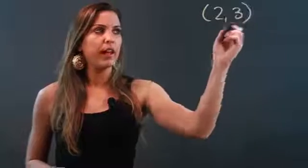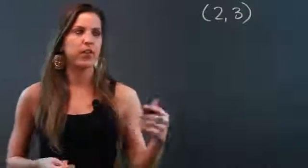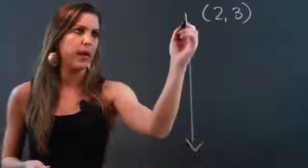So if you are given the point 2, 3 and we want to know the equation of the vertical and horizontal lines, first we'll look at the vertical line that passes through that point.